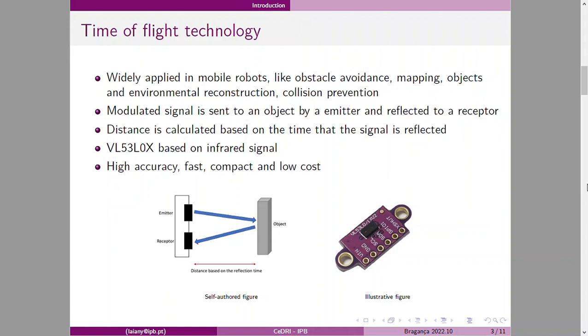The time-of-flight technology is widely applied in mobile robots, like obstacle avoidance, mapping objects and environmental reconstruction, and collision prevention. In this principle, a modulated signal is sent to an object by an emitter and then the signal is reflected and captured by a receptor. The distance is calculated based on the time that the signal is reflected.